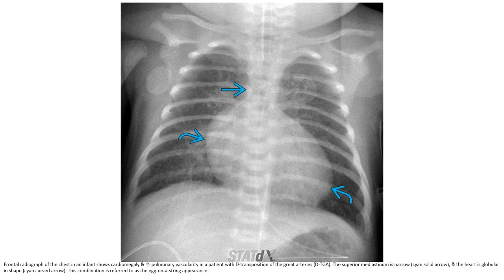Frontal radiograph of the chest in patients with D-transposition of the great arteries demonstrates cardiomegaly with increased pulmonary vascularity. The superior mediastinum is narrow and the cardiac silhouette is globular in shape. This combination is referred to as the egg-on-string appearance.